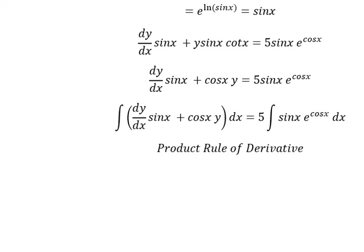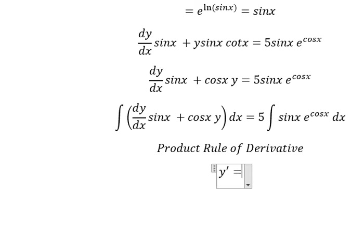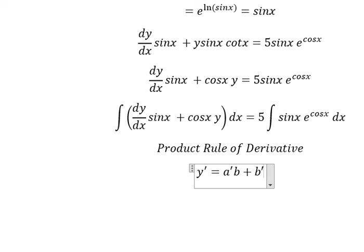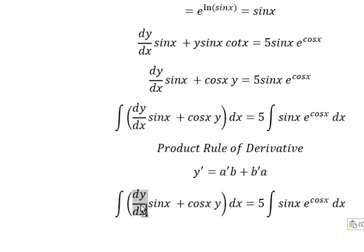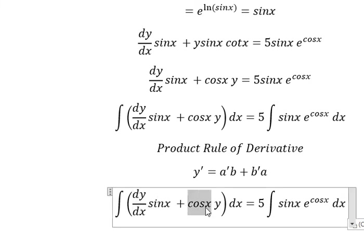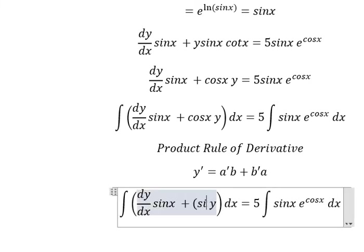The product rule states: the first derivative of (a·b) equals the first derivative of a multiplied by b, plus the first derivative of b multiplied by a. So here we have the first derivative of a multiplied by b, and the first derivative of b.